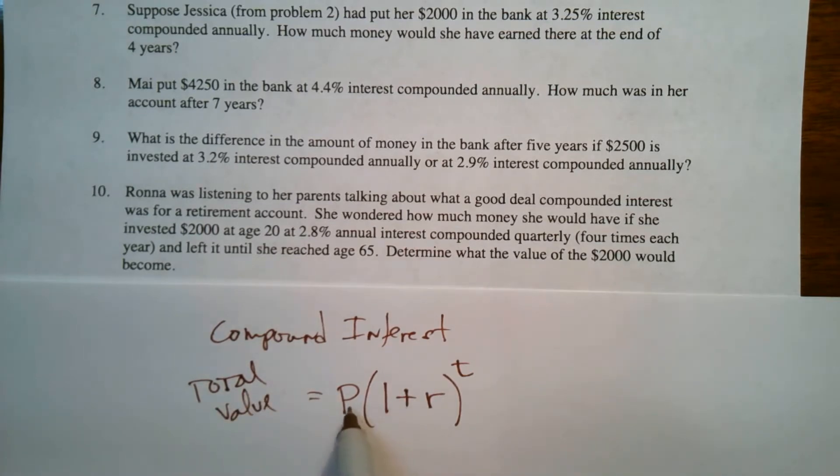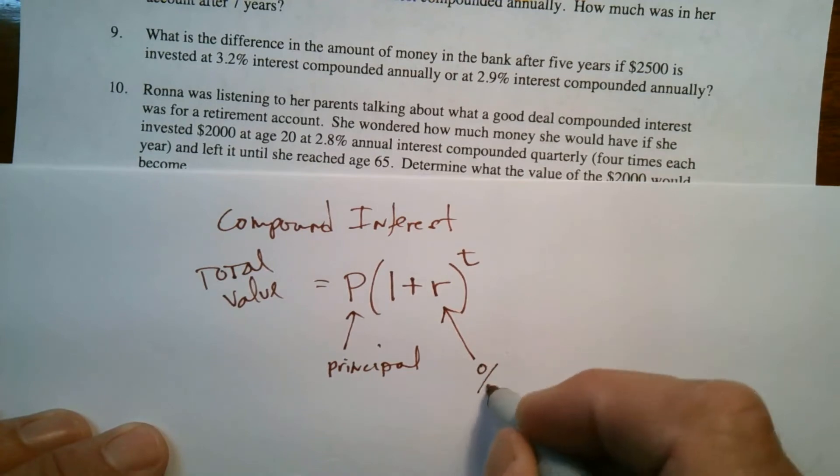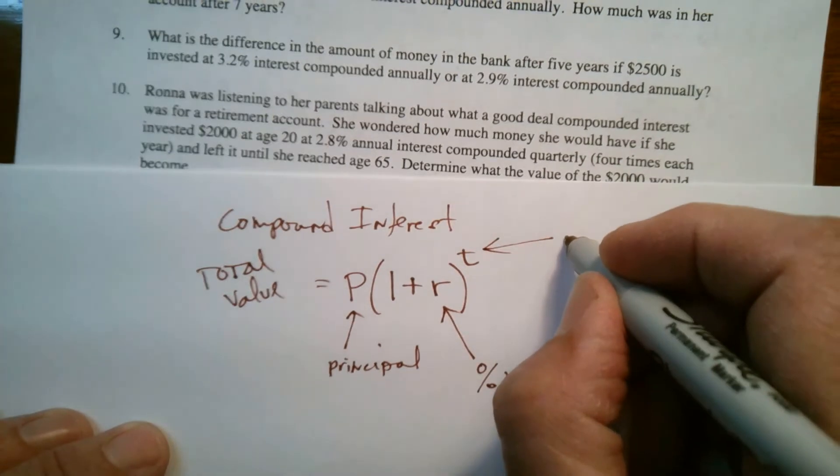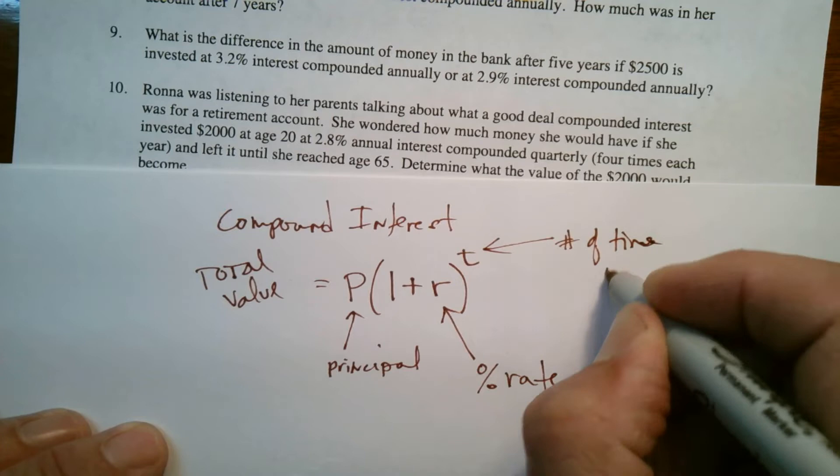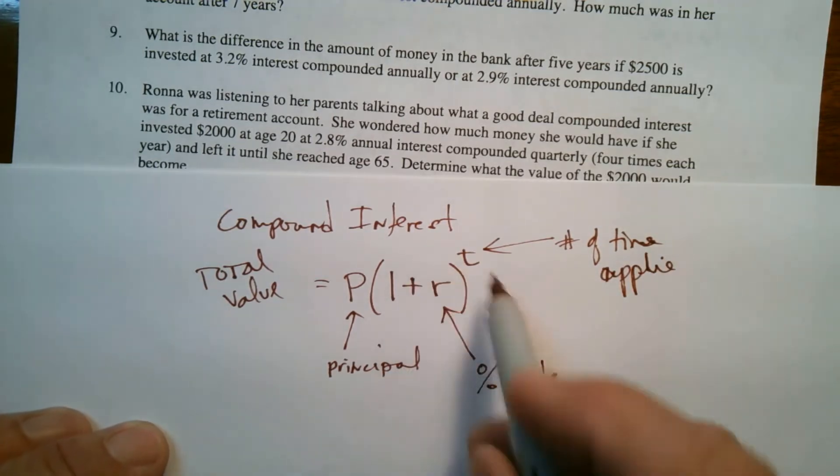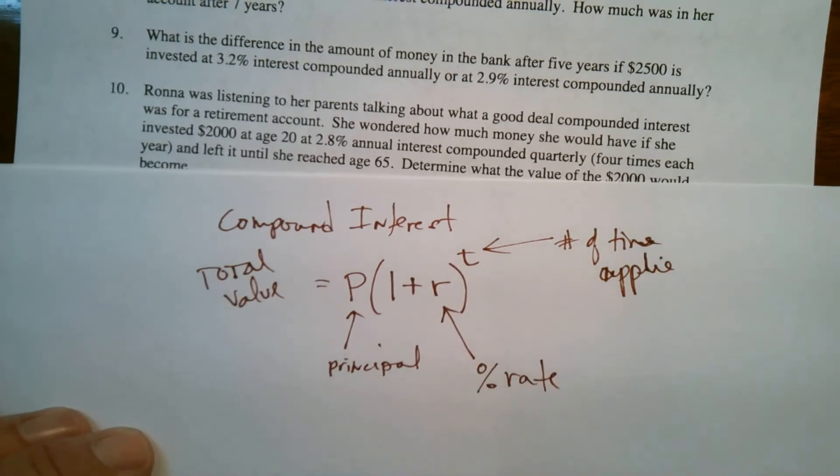And so we take our P, which is our principle. Our R is our interest rate, our percentage. And then T is the number of times applied. So if it's applied monthly for one year, monthly for one year would be 12, T would be 12, 12 months in a year.